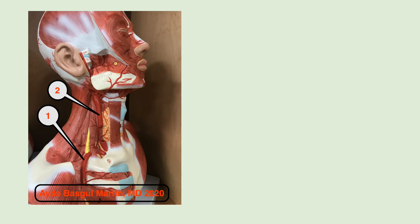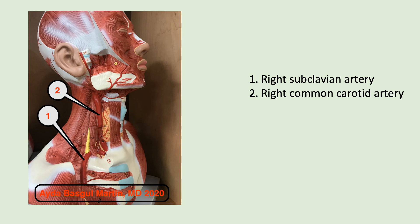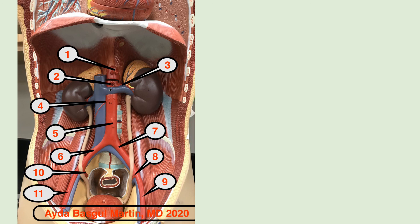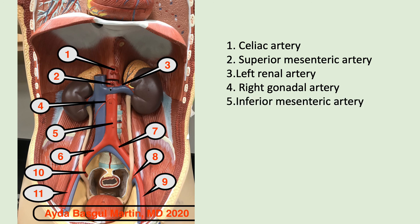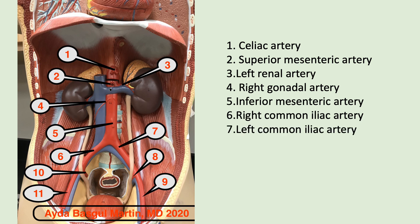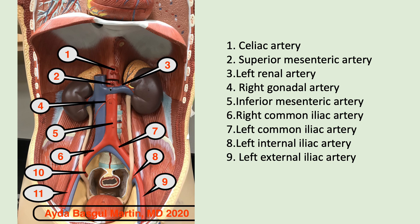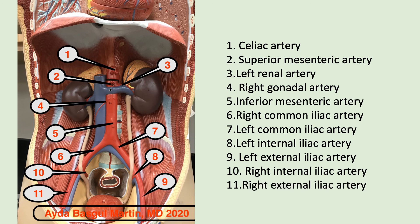Number one is the right subclavian artery. Number two is the right common carotid artery. In the next labeling: one — celiac artery; two — superior mesenteric artery; three — left renal artery; four — right gonadal artery; five — inferior mesenteric artery; six — right common iliac artery; seven — left common iliac artery; eight — left internal iliac artery; nine — left external iliac artery; ten — right internal iliac artery; eleven — right external iliac artery.